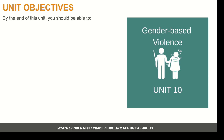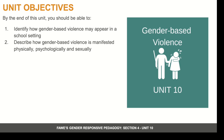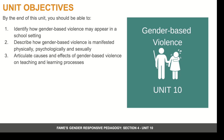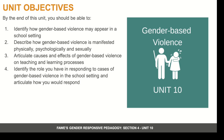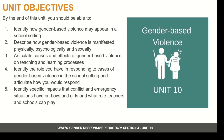By the end of this unit, you should be able to identify how gender-based violence might appear in a school setting; describe how gender-based violence is manifested physically, psychologically, and sexually; articulate causes and effects of gender-based violence on teaching and learning processes; identify the role you have in responding to cases of gender-based violence in the school setting and articulate how you would respond; identify specific impacts that conflict and emergency situations have on boys and girls and what role teachers and schools can play; and describe the symptoms of trauma and articulate how to address them.